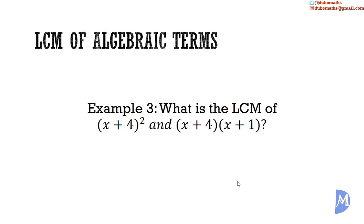A third example: what is the LCM of (x + 4)² and (x + 4)(x + 1)? Realizing the content of each bracket is indeed a factor, we see that the highest power of (x + 4) is (x + 4)², and the highest power of (x + 1) is (x + 1). So, the LCM is (x + 4)²(x + 1).